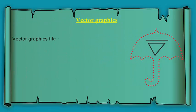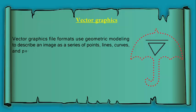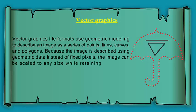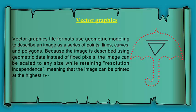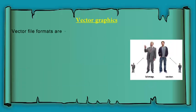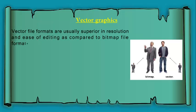Vector graphics file formats use geometric modeling to describe an image as a series of points, lines, curves, and polygons. Because the image is described using geometric data instead of fixed pixels, the image can be scaled to any size while retaining resolution independence, meaning that the image can be printed at the highest resolution a printer supports, resulting in a clear, crisp image.